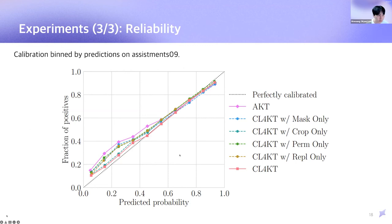As shown in this figure, the baseline AKT underestimates learners when the probability of correct answer is low. On the other hand, CL4KT is well calibrated and does not indicate any severe biases, which means that CL4KT is more reliable than the baseline.